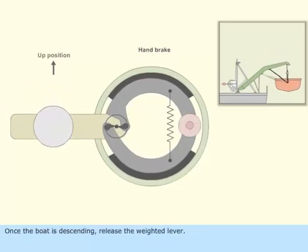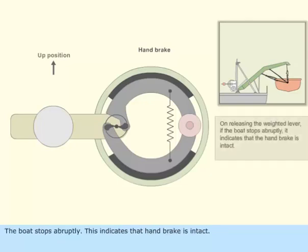Once the boat is descending, release the weighted lever. The boat stops abruptly. This indicates that handbrake is intact.